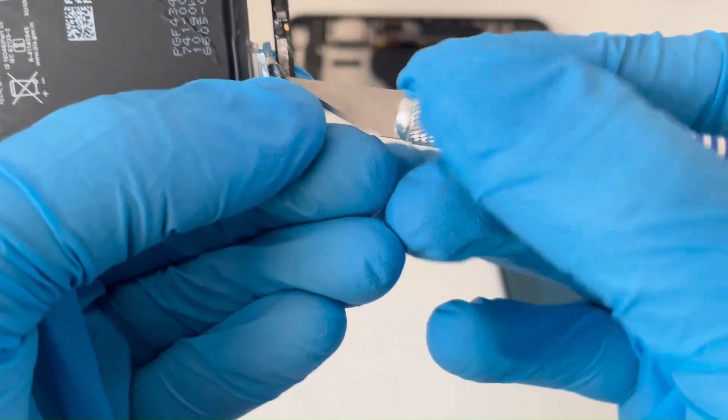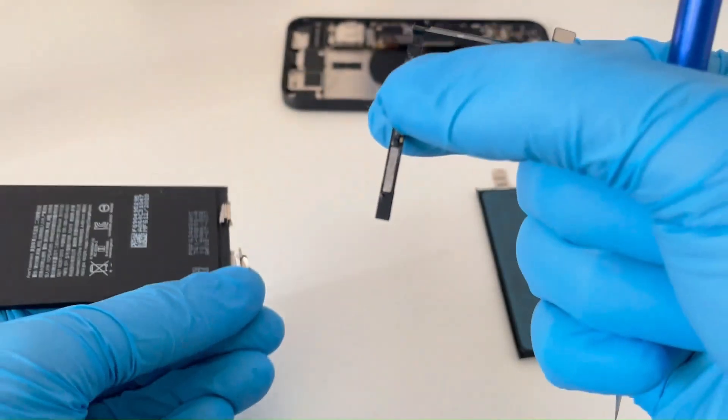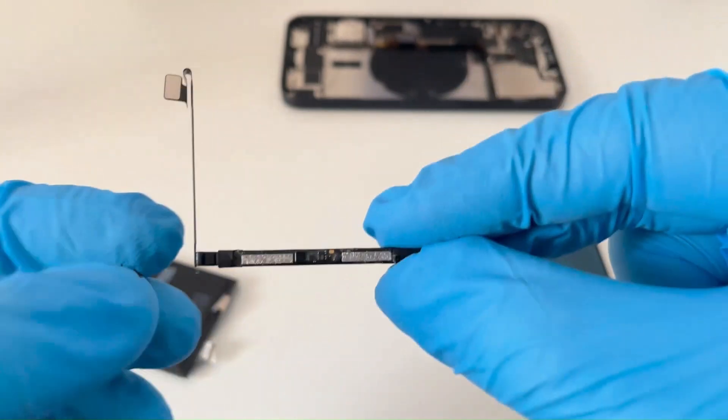The place where it is welded is easily cut with a sharp blade. And this small part must be welded to the new battery cell.